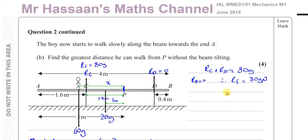That's the answer to part b — 1.53 meters is the greatest distance he can walk toward A before the beam tilts. Other questions from this paper are in the playlist shown at the end of the video. You can also find other M1 moments questions in the relevant playlist, and subscribe via the link. Thank you for watching.